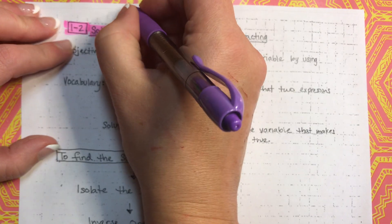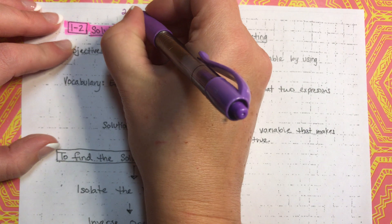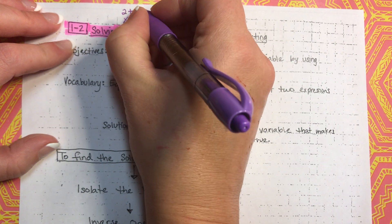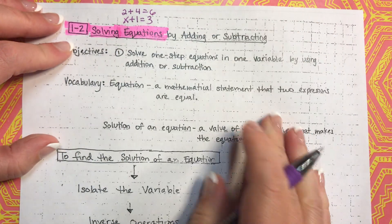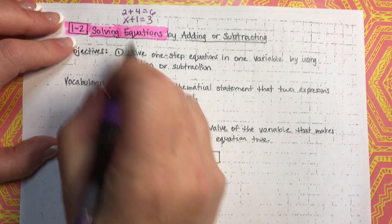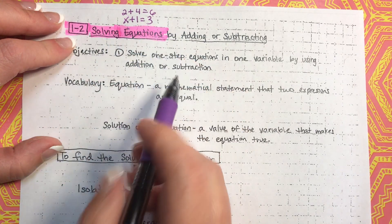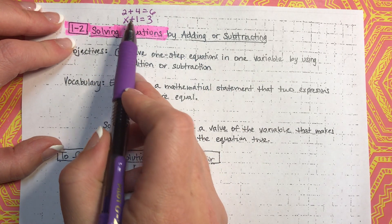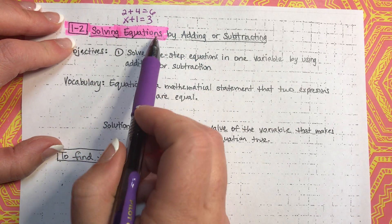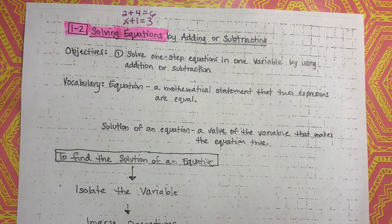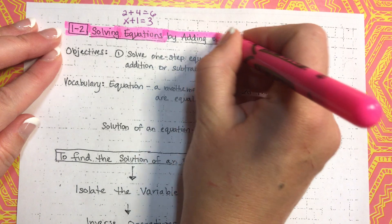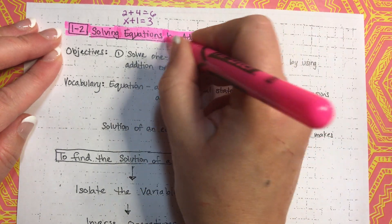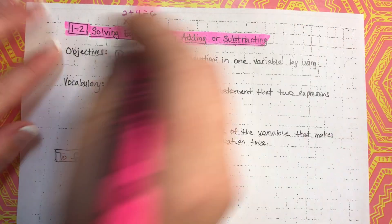Remember, just a numeric equation would involve only numbers. But this one, when you involve letters, is an algebraic equation, which is what we're going to be learning about. So, we're going to be finding the answers of equations by adding or subtracting, using those two operations.